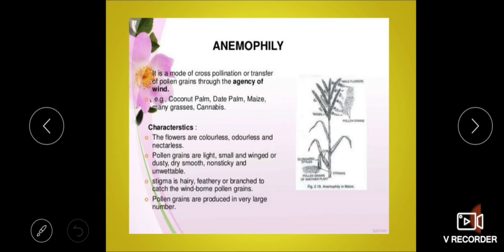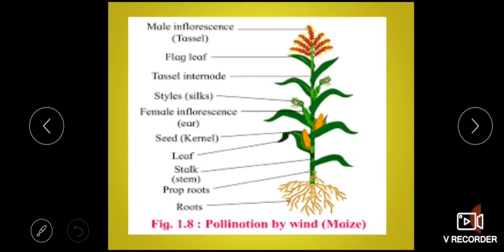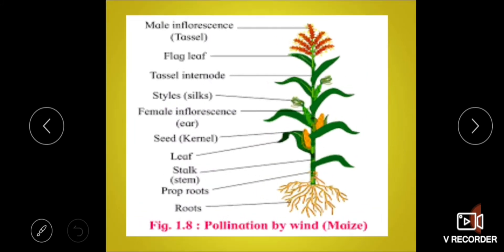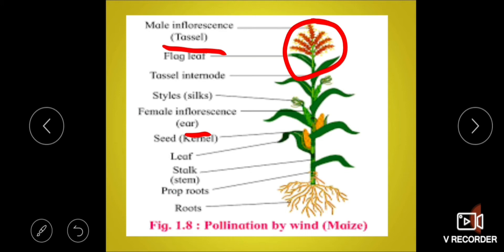In the case of maize, anemophily is the same. The male inflorescence of maize is called the tassel, and the female inflorescence is called the ear. The male inflorescence is at the apex of the plant and the female inflorescence is located below the apex.